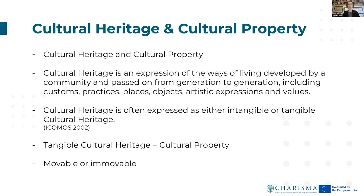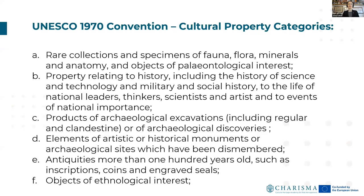To get a better idea of how broad cultural heritage can be, we look at the UNESCO 1970 Convention on the Prohibition of Illicit Trafficking of Cultural Property. In this convention, we find the following categories of cultural property: rare collections and specimens of fauna, flora, minerals and anatomy, and objects of paleontological interest; property relating to history, including the history of science and technology and military and social history, to the life of national leaders, thinkers, scientists and artists, and to events of national importance; products of archaeological excavations, including regular and clandestine or archaeological discoveries; elements of artistic or historical monuments or archaeological sites which have been dismembered; and antiquities more than 100 years old, such as inscriptions, coins and engraved seals.